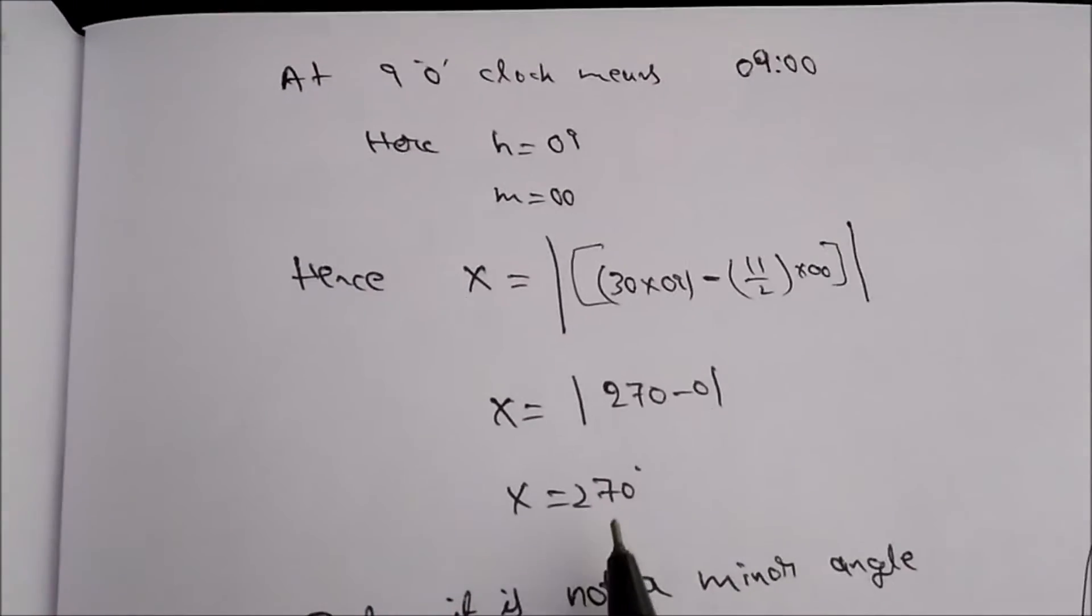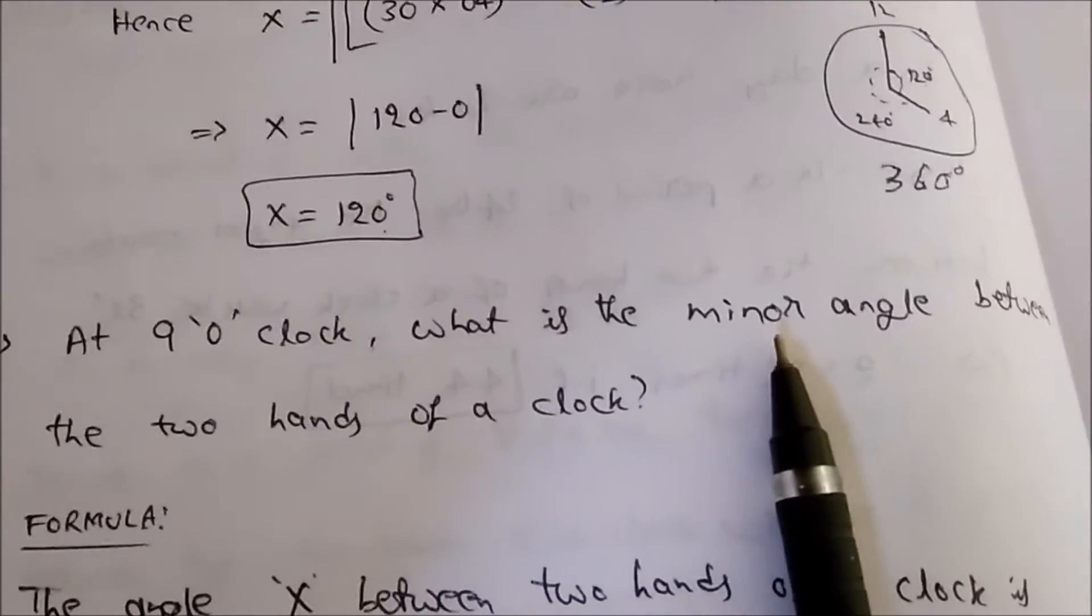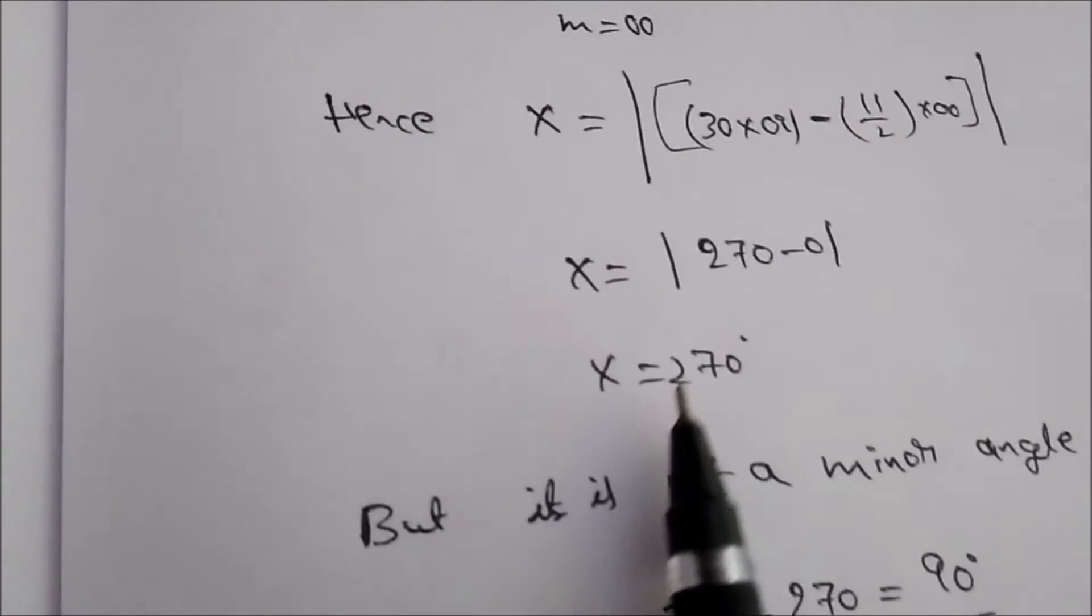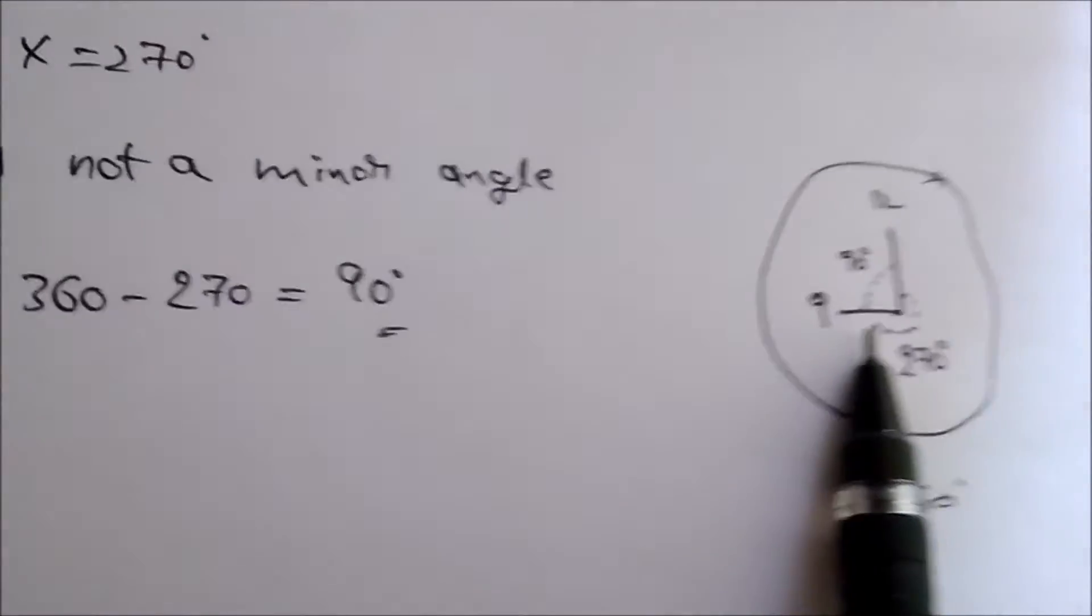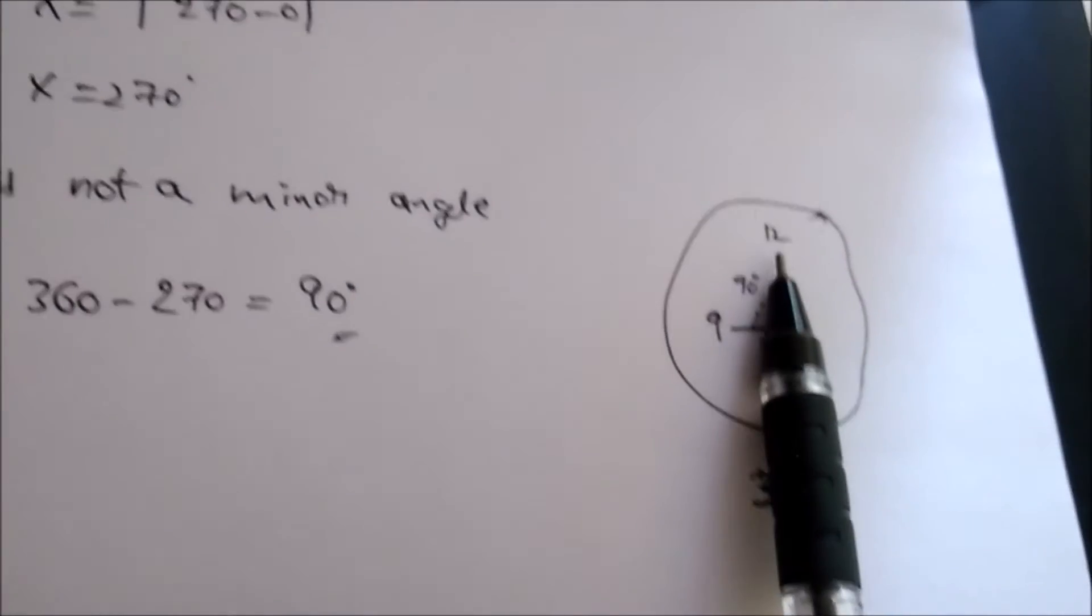Now 270 degrees is not a minor angle. I'll explain that. 9 o'clock means the clock will be like this: hour hand will be at 9, minute hand will be at 12.